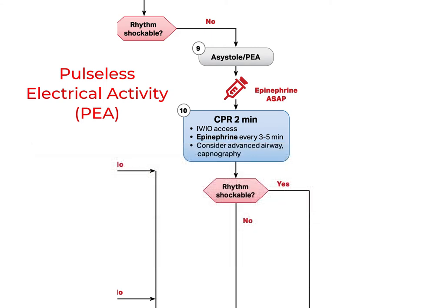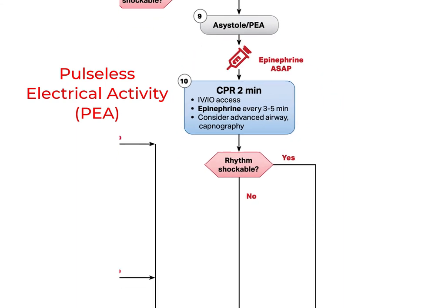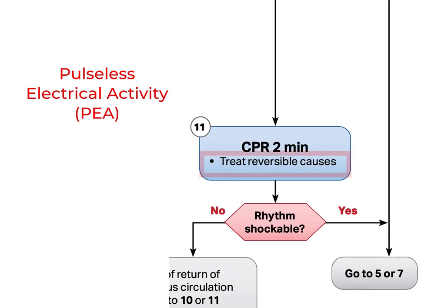We follow the same algorithm as asystole, but our focus is entirely different. We start out the same with good CPR and epinephrine as soon as possible, but with PEA our management must be focused on identifying the cause and correcting it if possible, and we need to do so very quickly.